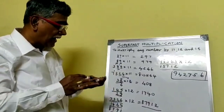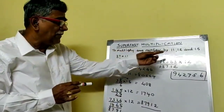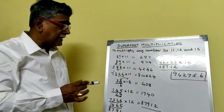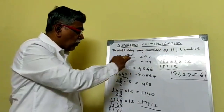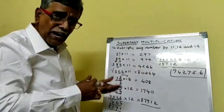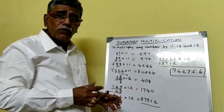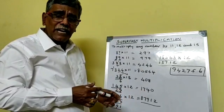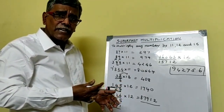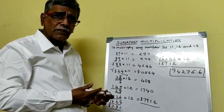In this manner, we can find the result to multiply any number by 11 and 12. How to multiply by 15 we will see in the next session. You can practice these methods — they will be helpful for any competitive examination, like CAT, SSC series examinations, public service examinations, or bank examinations.